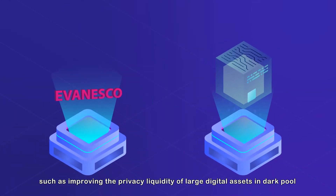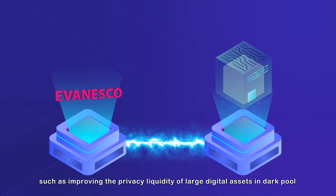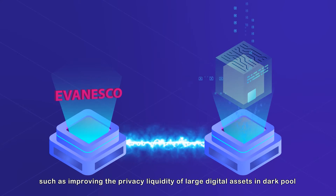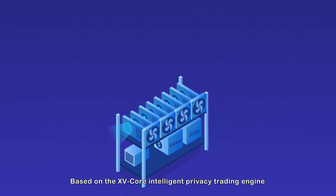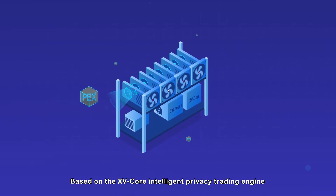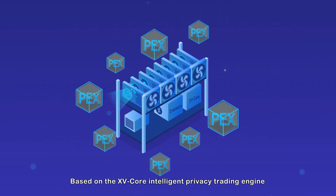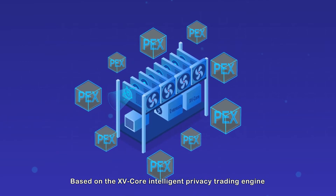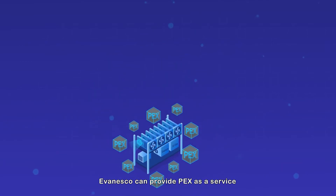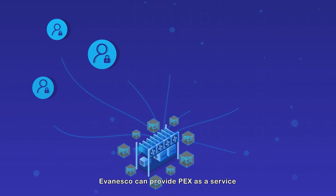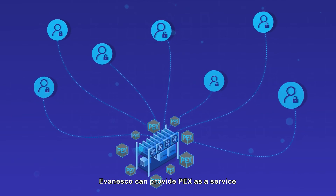This includes improving the privacy liquidity of large digital assets in dark pools. Based on the XvCore Intelligent Privacy Trading Engine, Evanesco can provide PEX as a service, which is a privacy liquidity interface service.